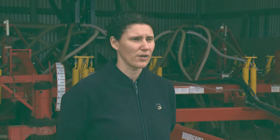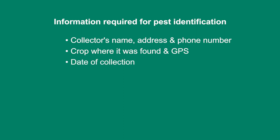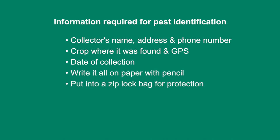The information that needs to go in with your samples is the same as with the photos: you need to provide the name, address and phone number of the collector, where it was found — ideally a GPS location — and the date it was collected. It's also a good idea to put all that information on a piece of paper in pencil, just in case there's leakage in the container, and put the information into a ziplock bag.